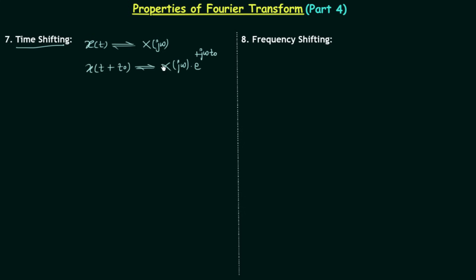The positive sign is for left shifting, and t0 is the amount by which we are performing the shifting. If we consider the case of right shifting, we use a negative sign, and the negative sign will also appear in the exponent. This is the time shifting property of the Fourier transform, and now we will prove it.